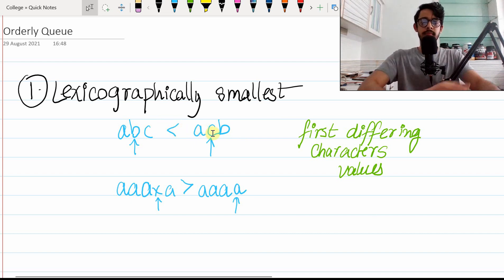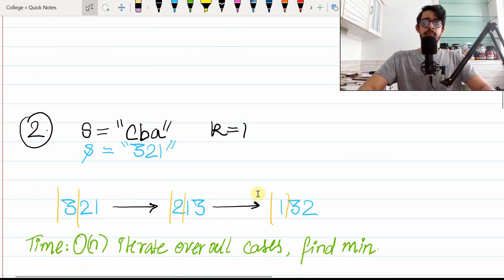Let's take another case where we have triple A-X-A, which is going to be lesser than triple A-A. That's because of this first differing character, X and A. Here the value of X is greater than the value of A, so this will be a string greater than this string.